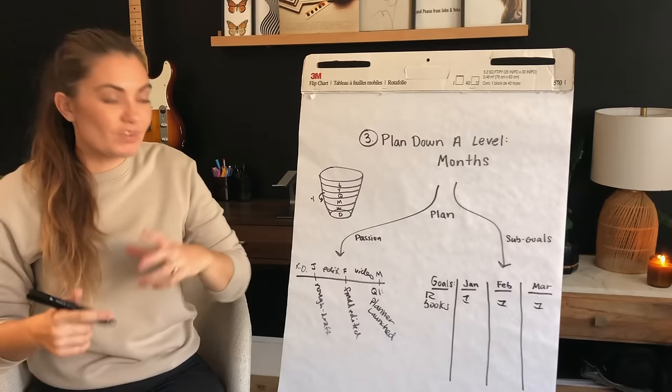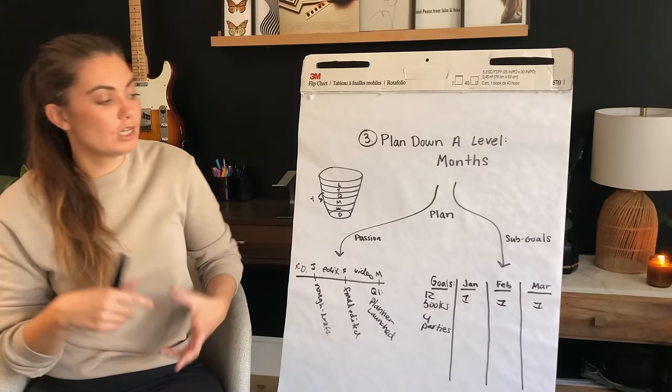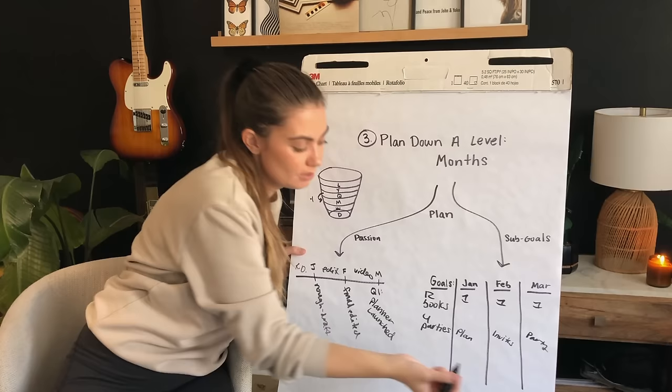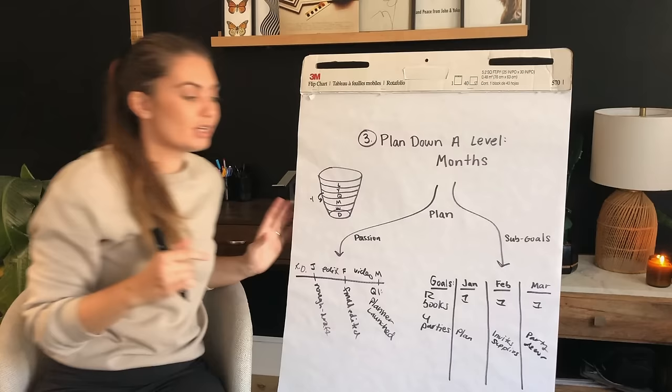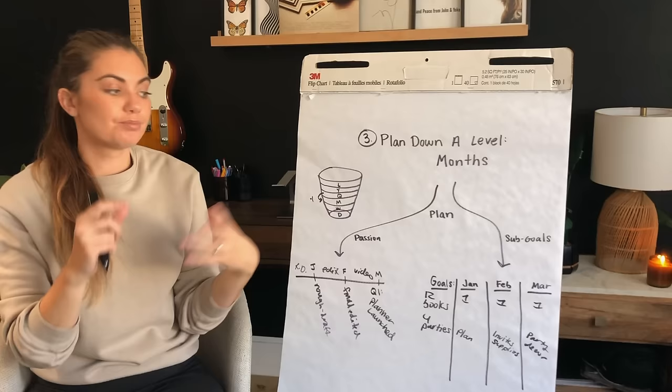Let's say I wanted to host four parties this year — that would be one per quarter. Maybe I want to host a murder mystery party and do that in March. So in March I'd have the party, maybe January I'd do the planning, and maybe February I'd focus on the invites. I can chunk that down into phases: a planning phase, an invites and supplies-gathering phase, and a party and decor phase. When you get down to monthly planning, you make it a lot more specific and granular — do you write your own murder mystery or buy one? Quarterly planning is about setting benchmarks for yourself at this bird's eye level.